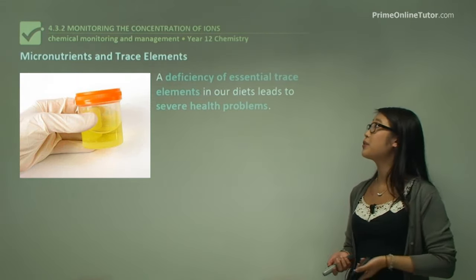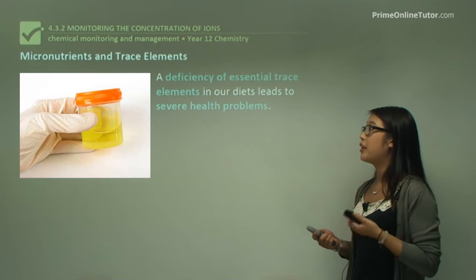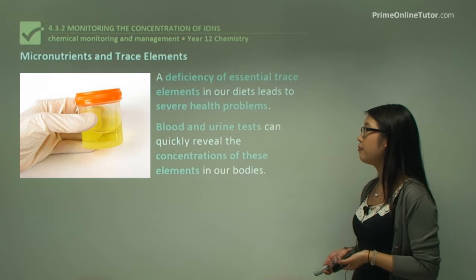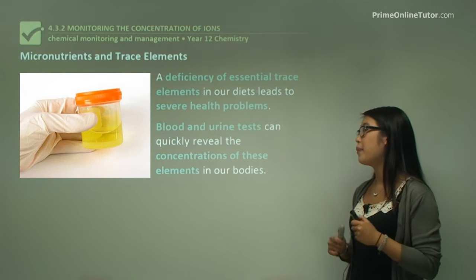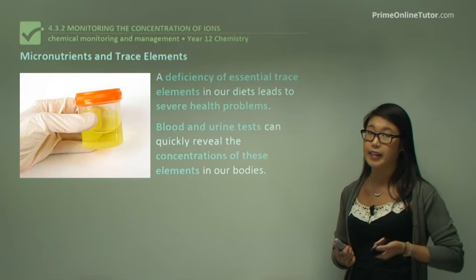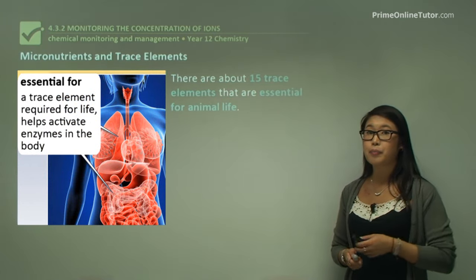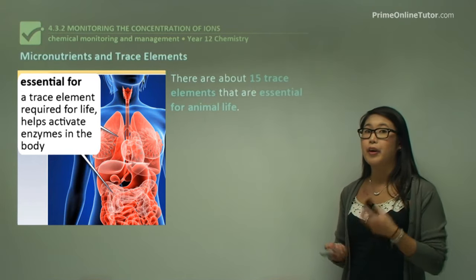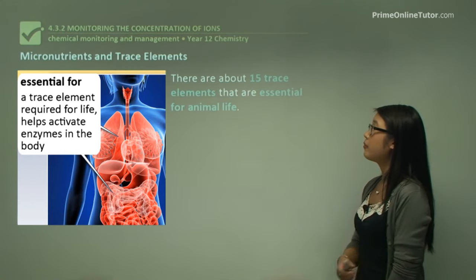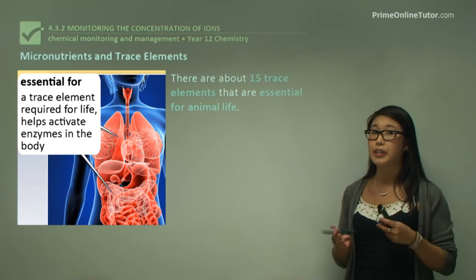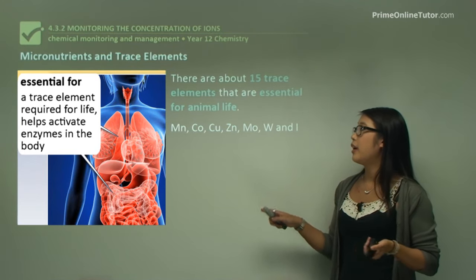We can look at deficiencies of essential trace elements in our diet to diagnose severe health problems. Blood and urine tests can quickly give us a readout of how much trace elements we have in our bodies. Trace elements are really important in the body because they help with enzymes, energy production, and cell metabolism. About 15 trace elements are essential for animal life, including manganese, copper, and zinc.